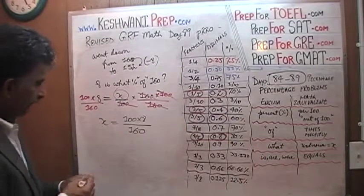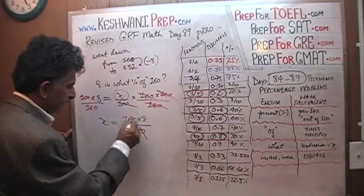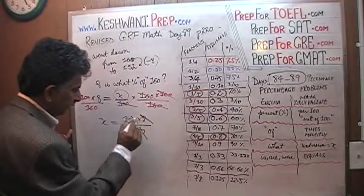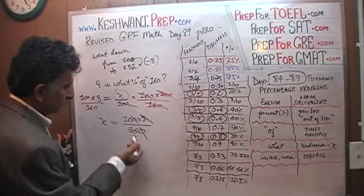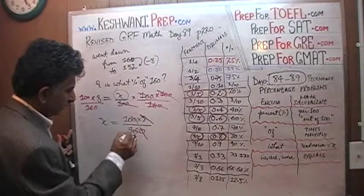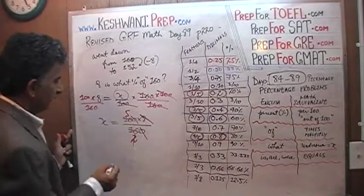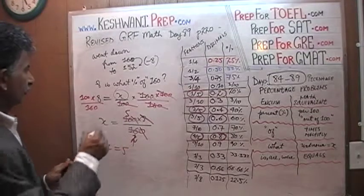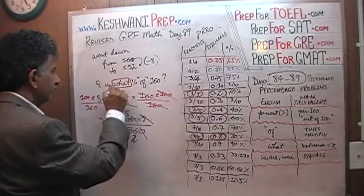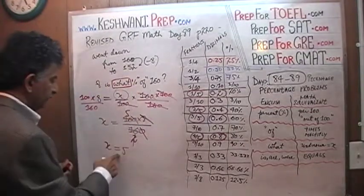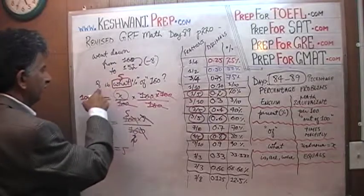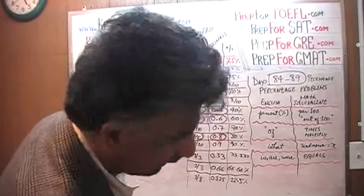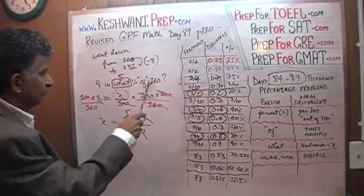Let's simplify it. Divide top and bottom by 10 — a zero drops out. Divide top and bottom by 8 — this 8 drops out and 16 becomes 2. Divide top and bottom by 2 again, and 10 becomes 5. x equals 5. So the question was: 8 is what percent of 160? We just found out the answer is 5. What we are claiming is that 8 is 5% of 160.